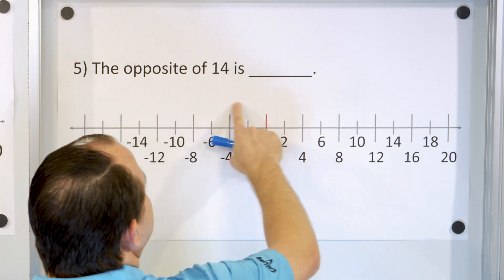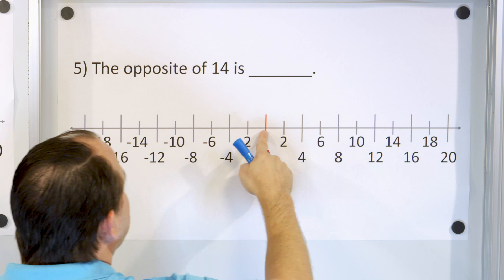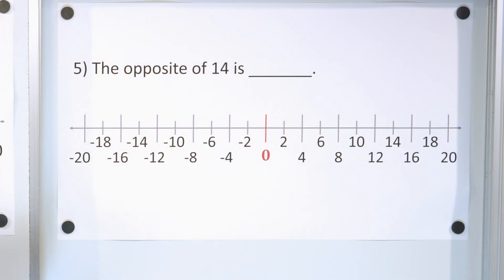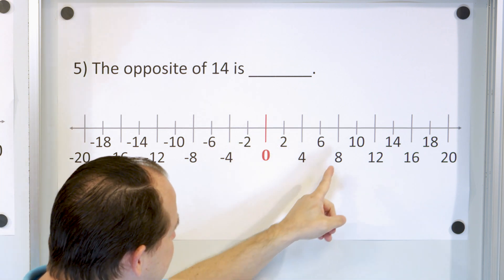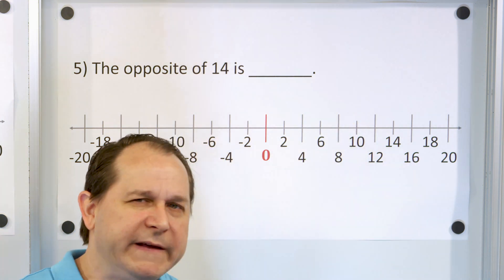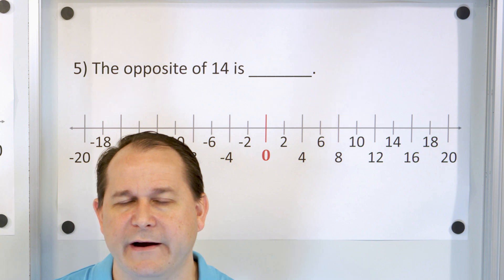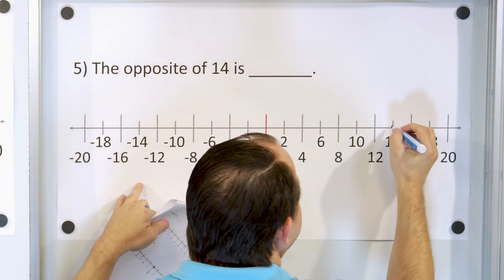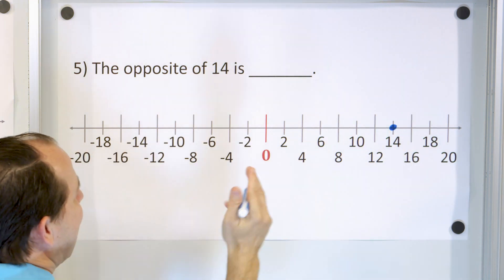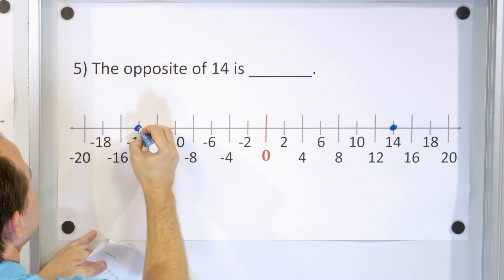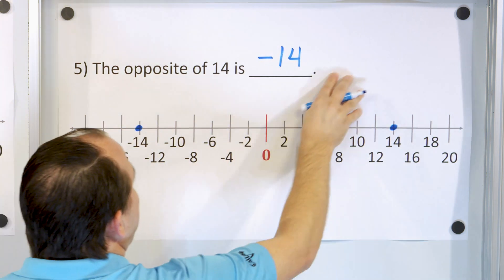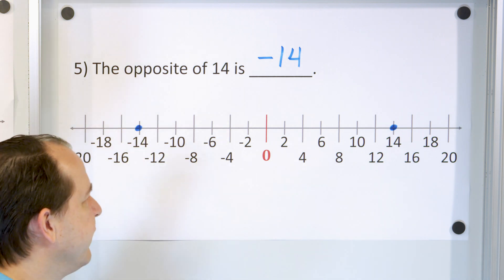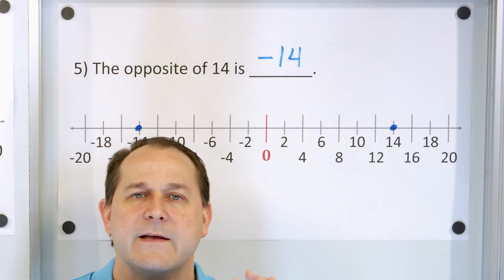Here we have some larger numbers. Notice now our number line goes off to 20 and to negative 20, counting by twos: 2, 4, 6, 8, 10, 12, 14, 16, 18, 20, and the same in the negative direction. The number one is still here between zero and two, and the number nine is between eight and ten — all the integers are there. The opposite of 14: 14 degrees above zero would be here, and the opposite of that would be the same distance below zero — negative 14 degrees. The more negative you are, the more below zero you are. That would be 14 degrees colder than zero Celsius, or you could think of it as owing someone $14.